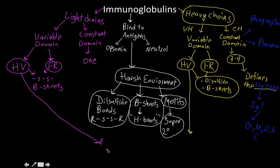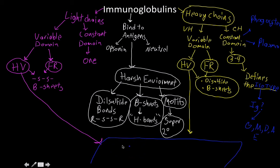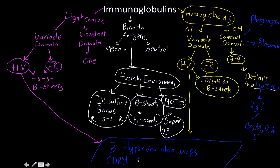The hypervariable domain of the light chain and the hypervariable domain of the heavy chain both come together to contribute to the three hypervariable loops, sometimes called the complementary determining region (CDR) because they're complementary with the epitope being bound. These are abbreviated CDR1, CDR2, and CDR3. They can also be called HV1, HV2, and HV3, but the book uses the CDR nomenclature.